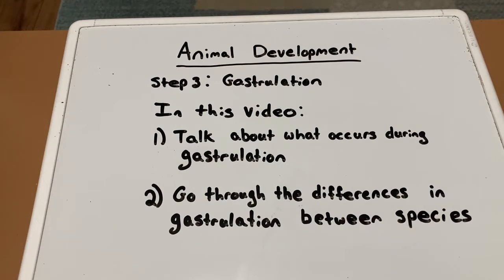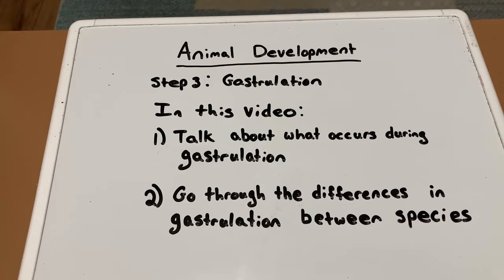In the previous video, we talked about the second step in the embryonic stages, which is cleavage. In this video, we will talk about the third step, which is gastrulation. Specifically, we will talk about what occurs during gastrulation and go through the differences in gastrulation between species.